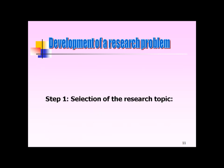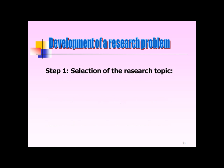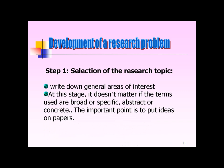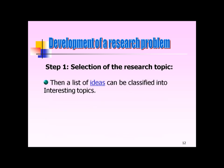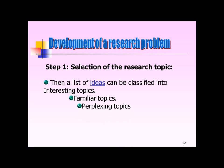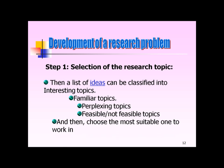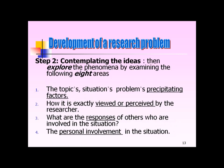Development of a research problem. Step 1: Selection of the research topic. Write down general areas of interest. At this stage, it doesn't matter if the terms used are broad or specific, abstract or concrete — the important point is to put ideas on paper. A list of ideas can be classified into interesting topics, familiar topics, perplexing topics, and feasible topics. Then choose the most suitable one to work on.